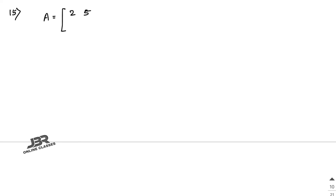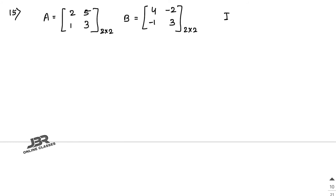Sum number 15: matrix A = [2, 5; 1, 3], matrix B = [4, -2; -1, 3], and I is the 2×2 identity matrix [1, 0; 0, 1]. The transpose of A, written A^T, means rows become columns: so A^T = [2, 1; 5, 3].